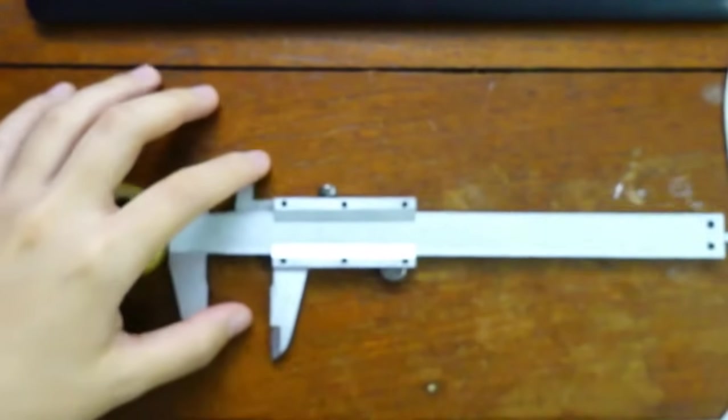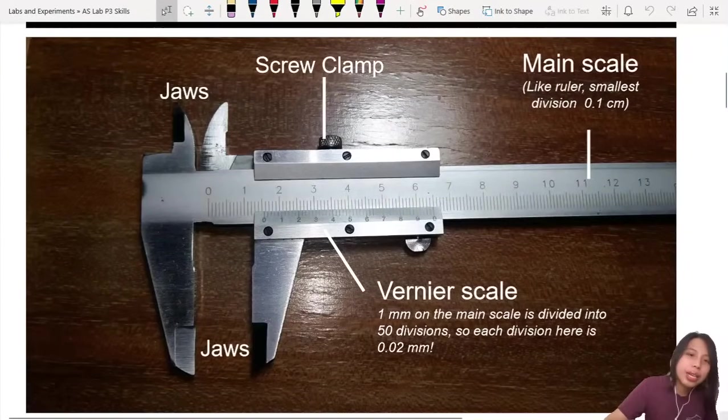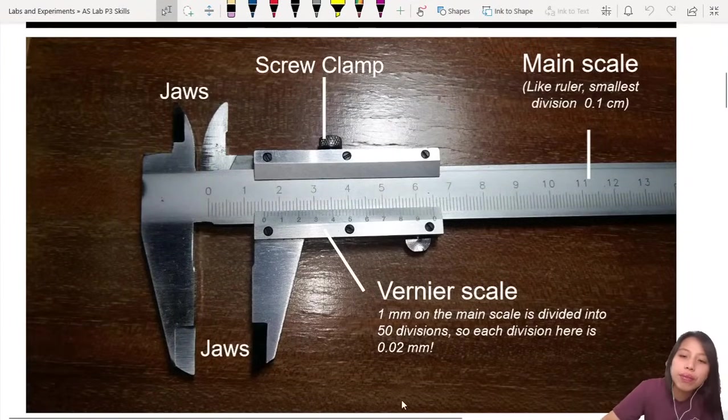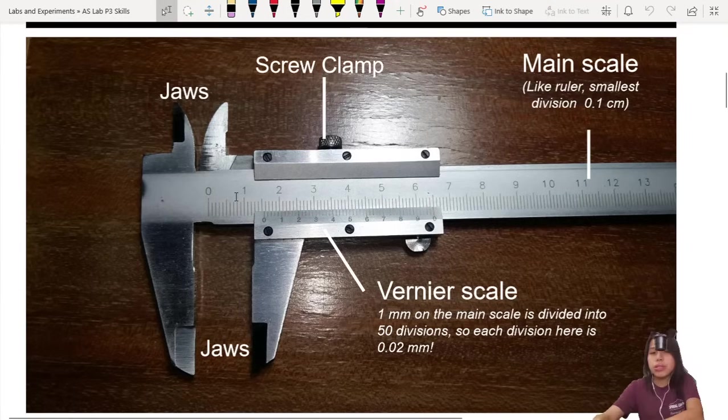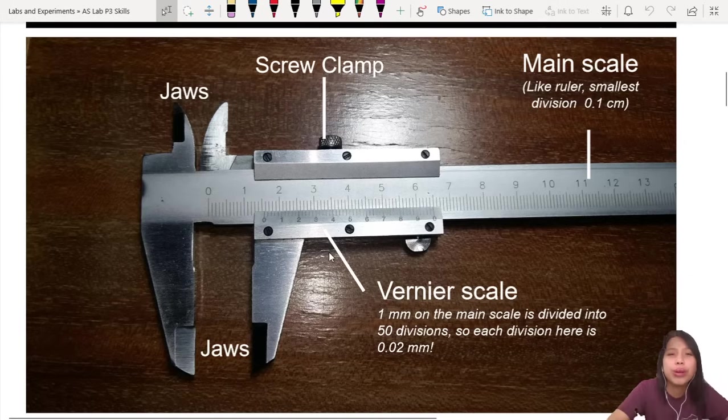Okay and back to the anatomy. So we have the jaws, we have the screw clamp to lock it, vernier scale and the main scale. The main scale is like your average ruler. How you measure ruler? You better know how to use the ruler okay.